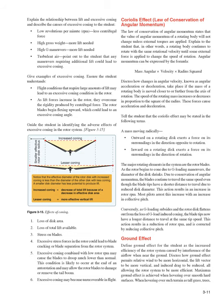Adverse effects of excessive coning in the rotor system: 1. Loss of disc area. 2. Loss of total lift available. 3. Stress on blades. 4. Excessive stress forces could lead to blade cracking or blade separation from the rotor system. 5. Excessive coning combined with low rotor RPM may cause the blades to droop much lower than normal — this condition is likely to occur at the end of an autorotation and may allow the rotor blades to damage or remove the tail boom. 6. Excessive coning may become unrecoverable in flight.